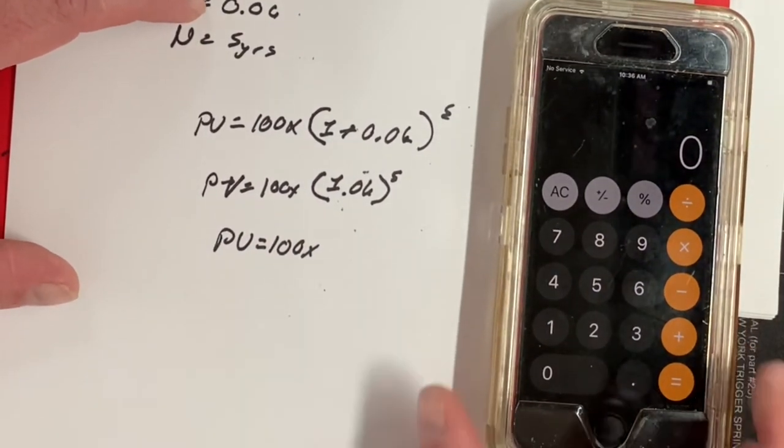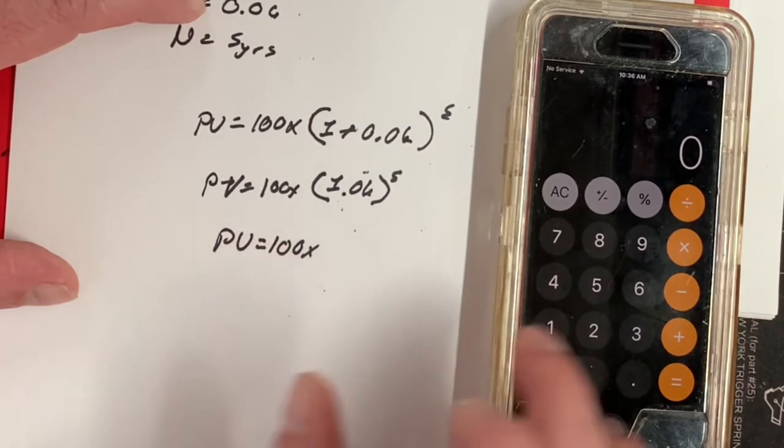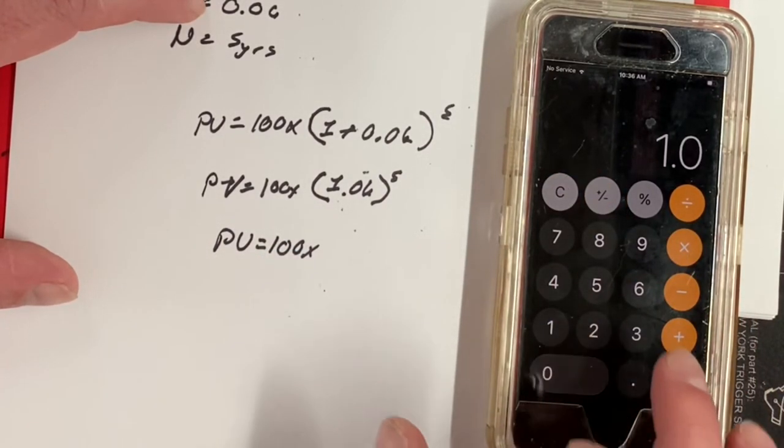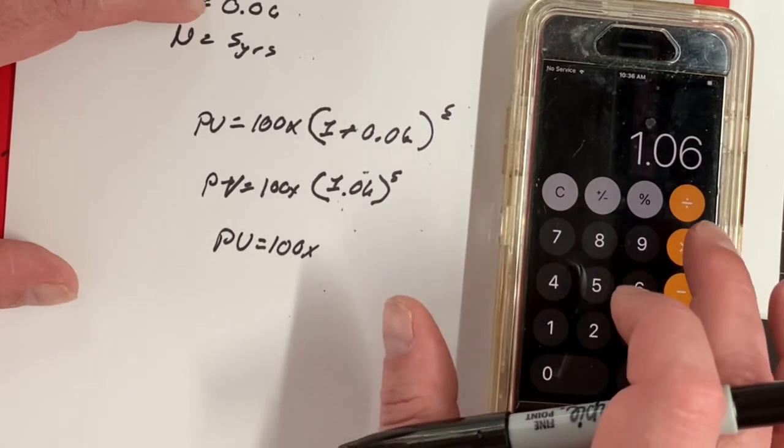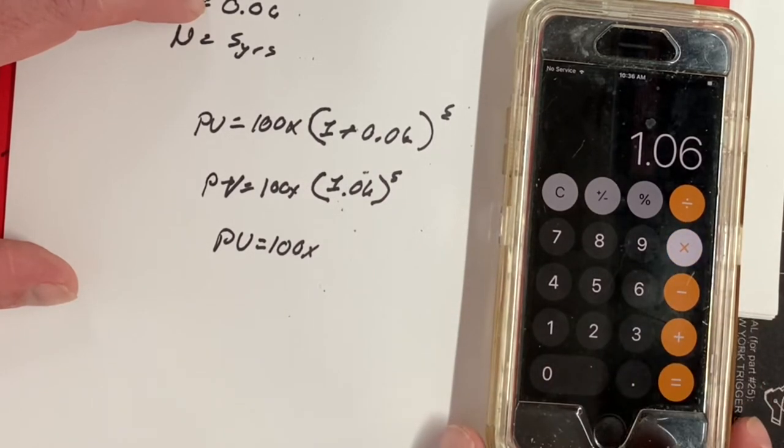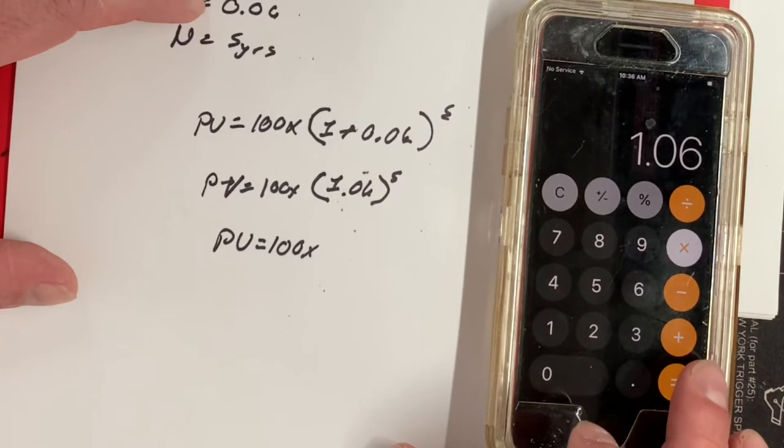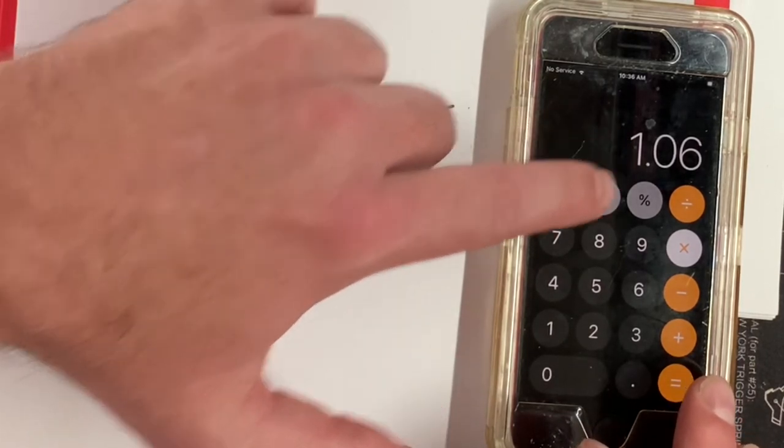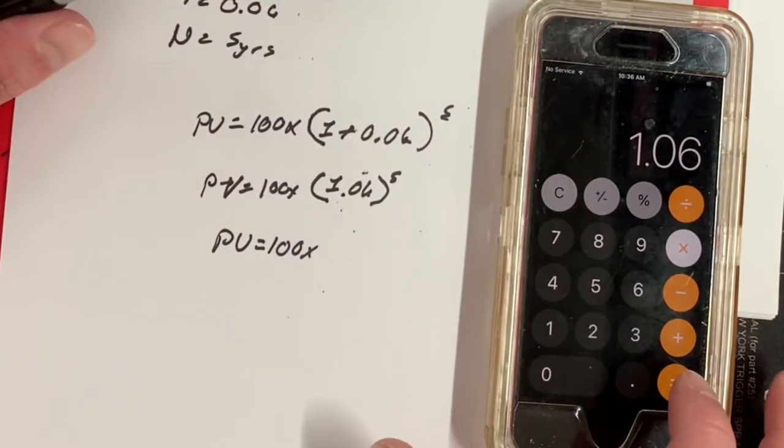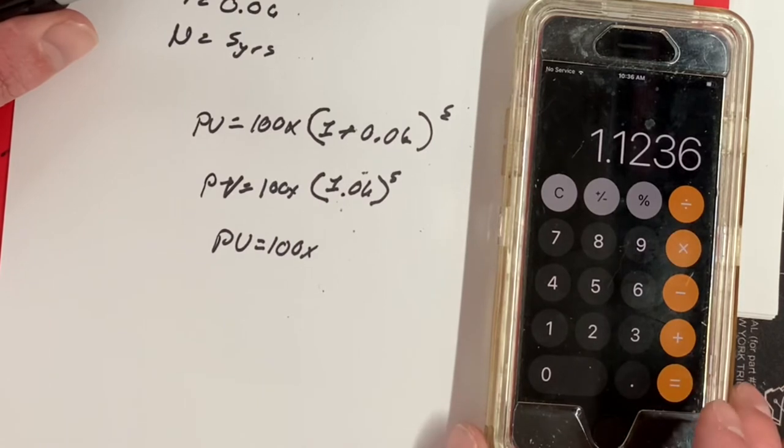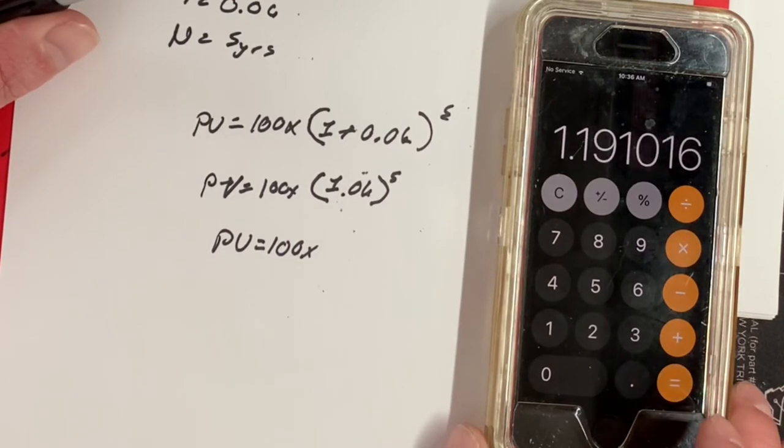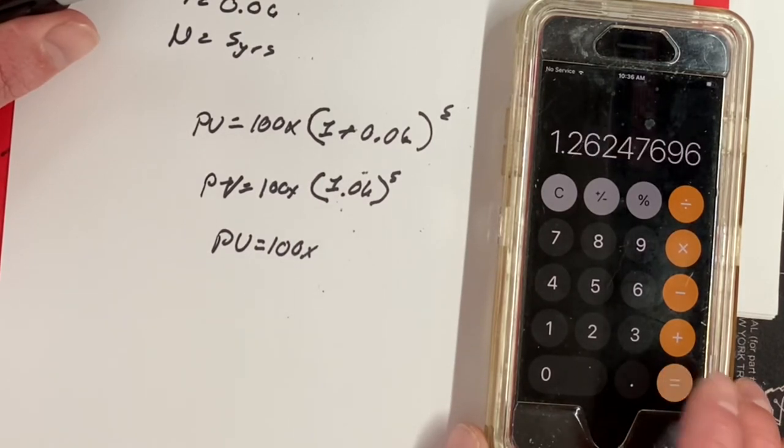So we're going to take 1.06 times, and this is to the first power, by the way. And now we're going to hit it. 2nd power, 3rd power, 4th power, 5th power.